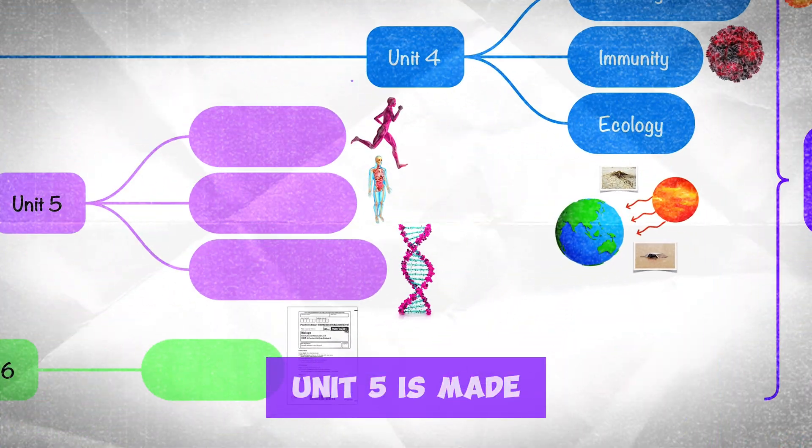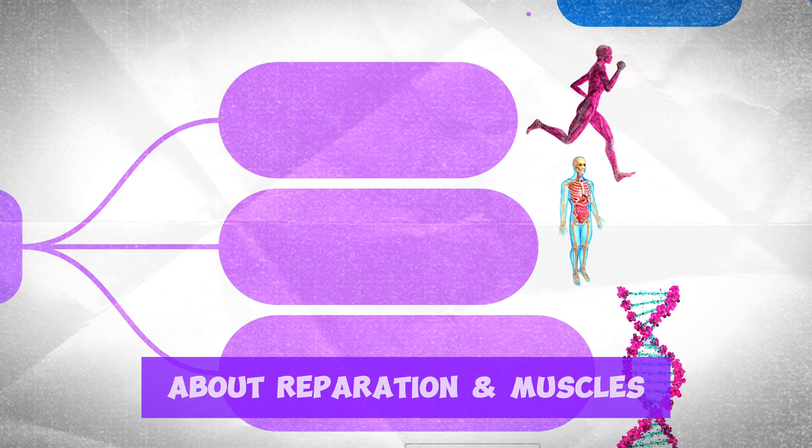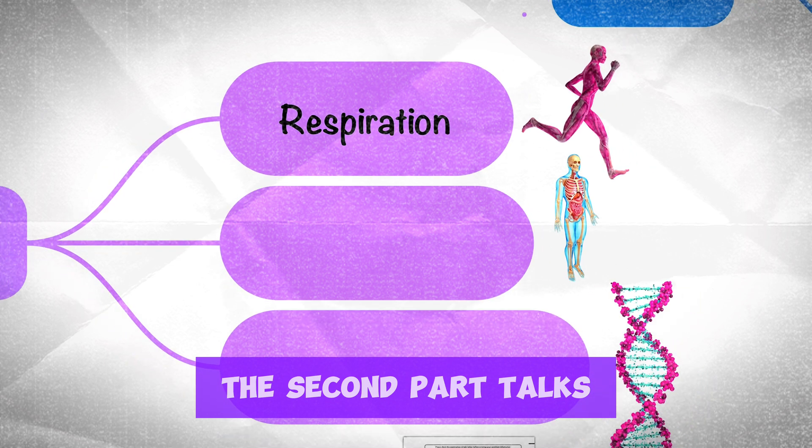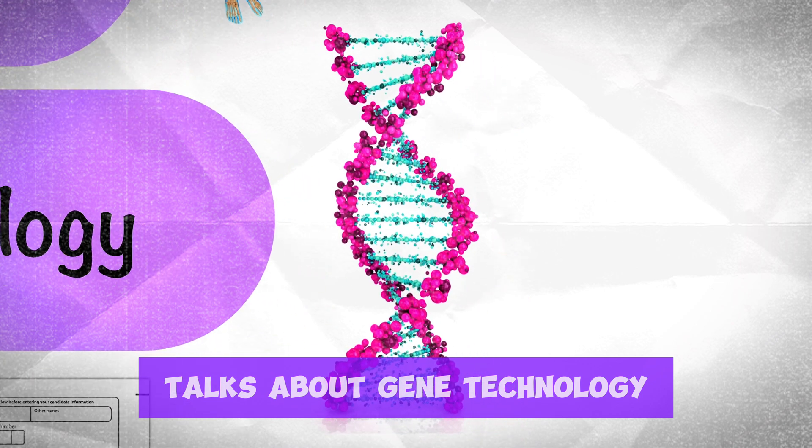Unit 5 is made up of three main parts. The first part talks about respiration and muscles. The second part talks about homeostasis, and the last part talks about gene technology.